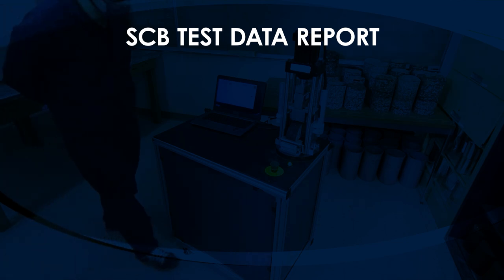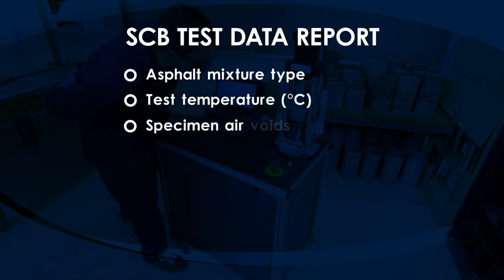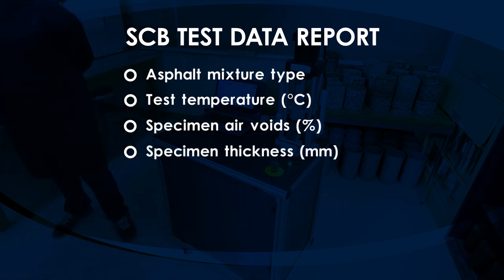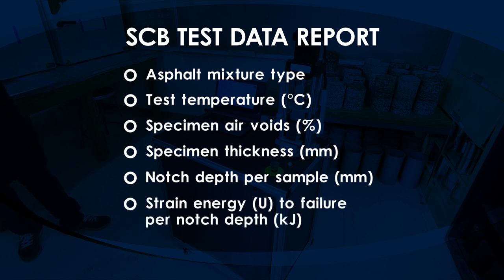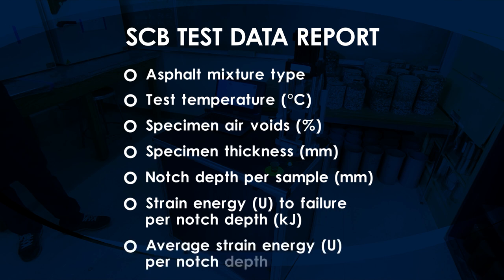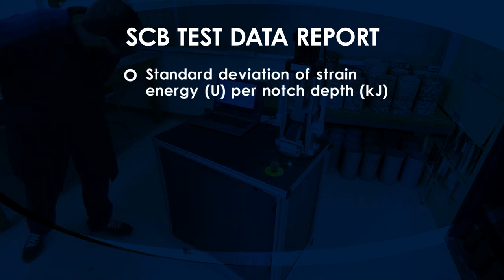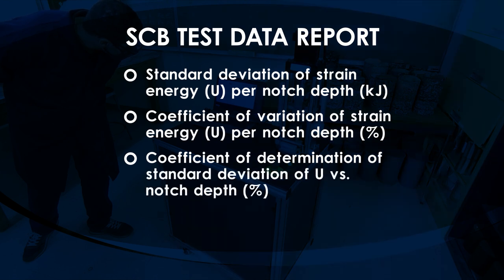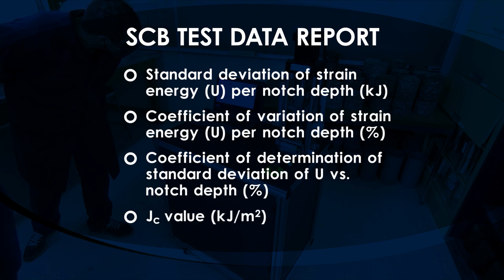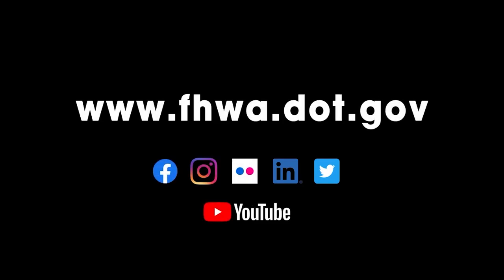An SCB test data report should include the following parameters: asphalt mixture type, test temperature in Celsius, specimen air voids in percentage, specimen thickness in millimeters, notch depth per sample in millimeters, strain energy to failure per notch depth in kilojoules, average strain energy per notch depth in kilojoules, standard deviation of strain energy per notch depth in kilojoules, coefficient of variation of strain energy per notch depth percentage, coefficient of determination of standard deviation of U versus notch depth percent, and J integral value in kilojoules per square meter. For more information about asphalt testing procedures or other pavement testing resources, visit fhwa.dot.gov.